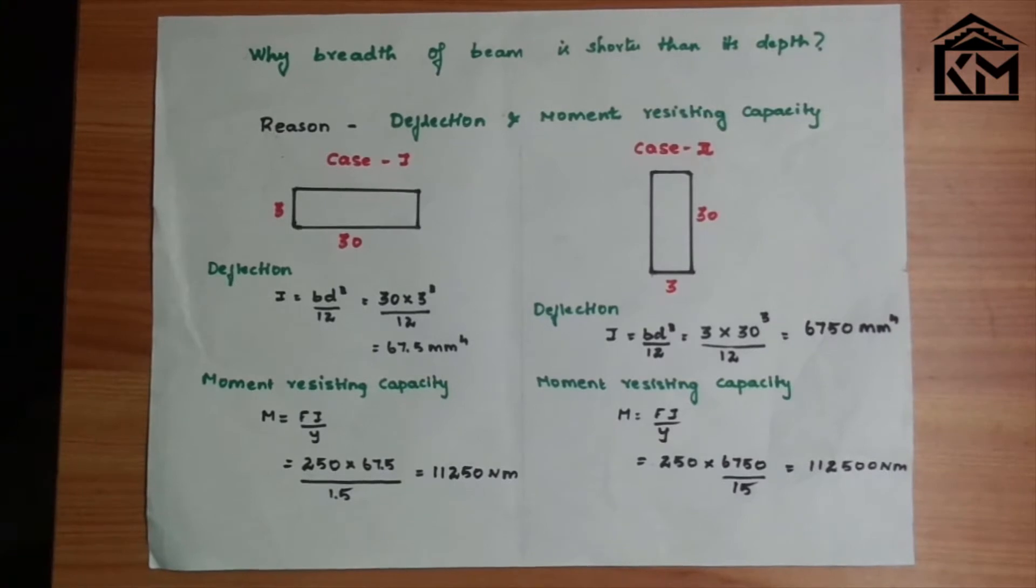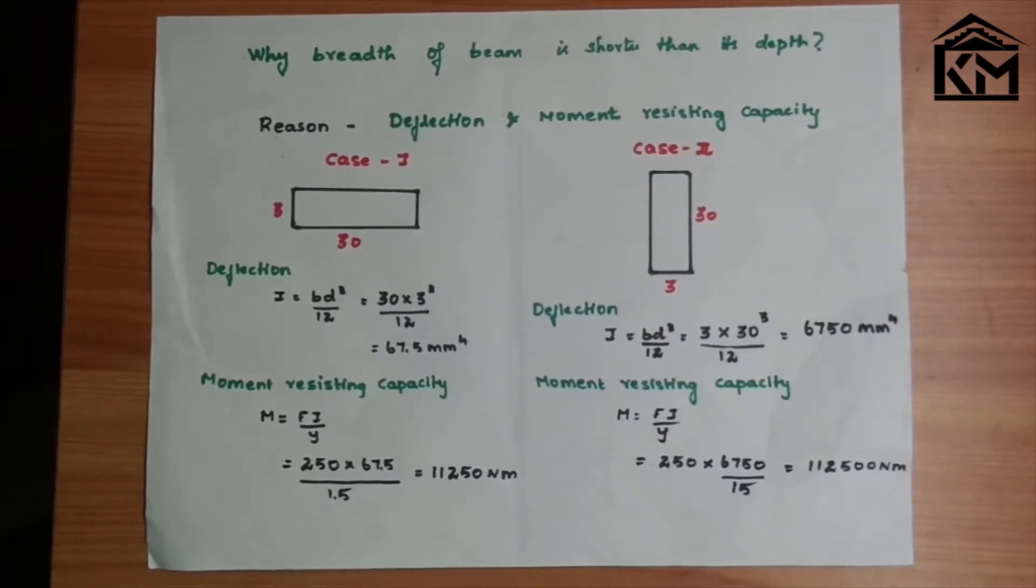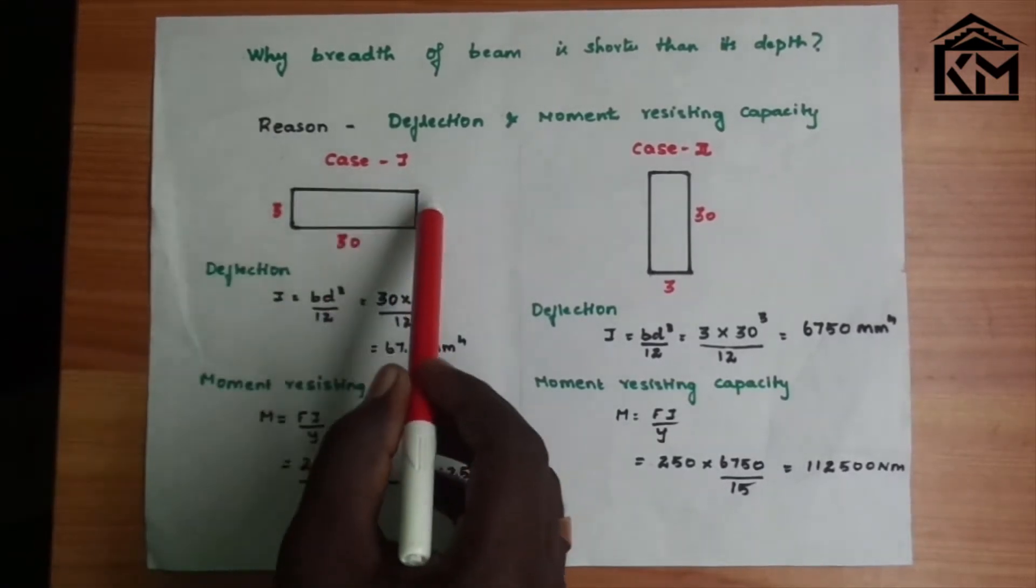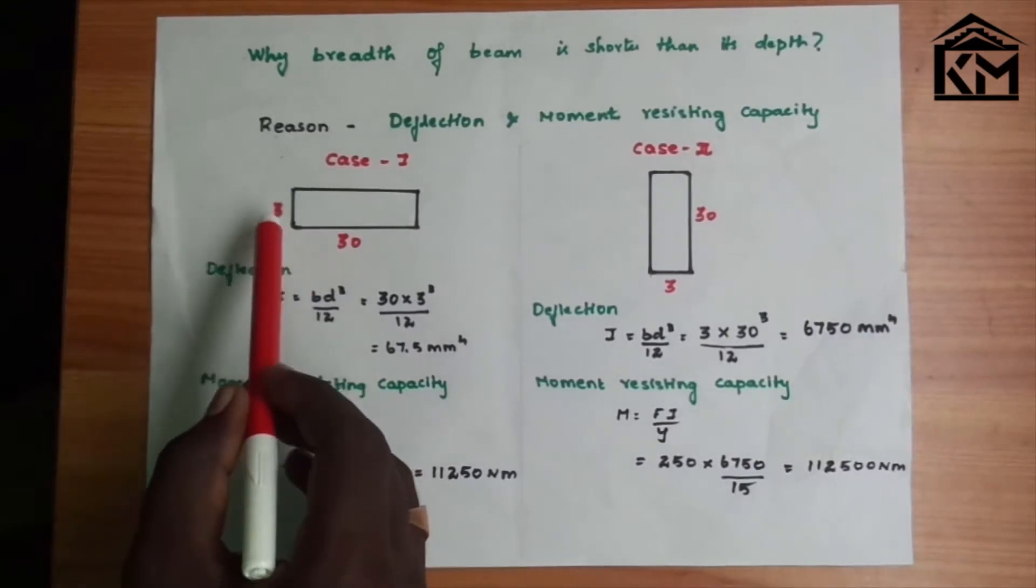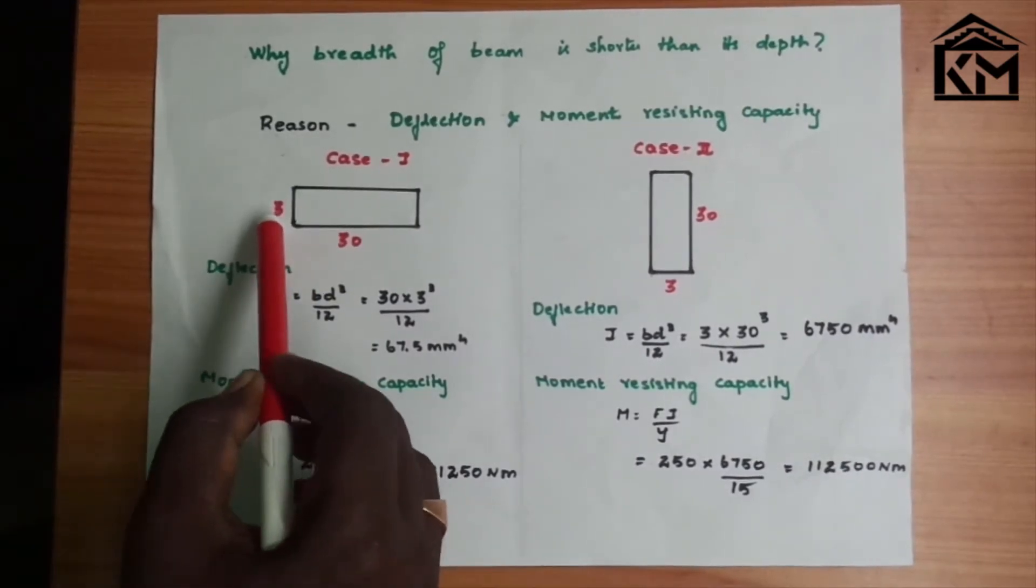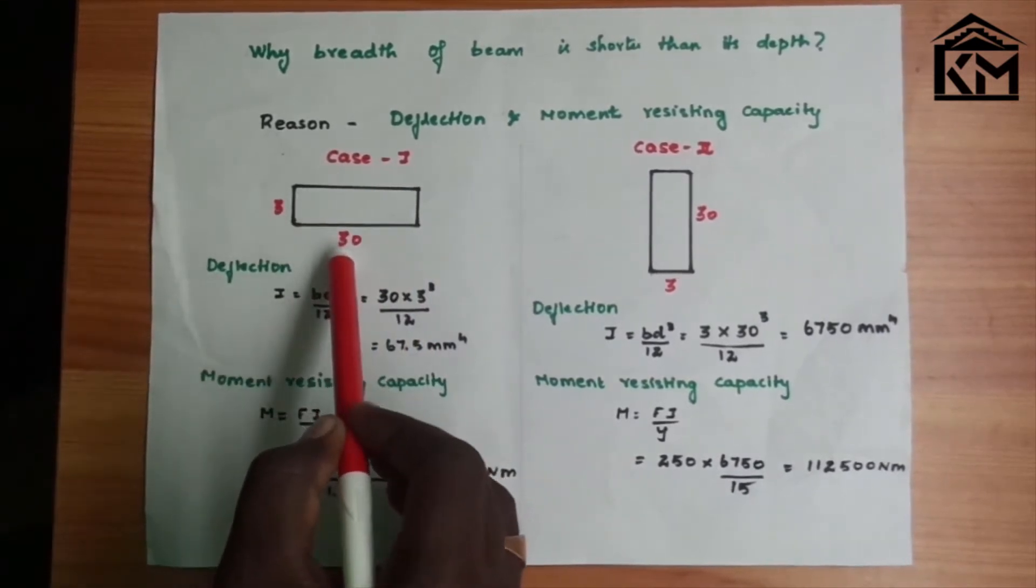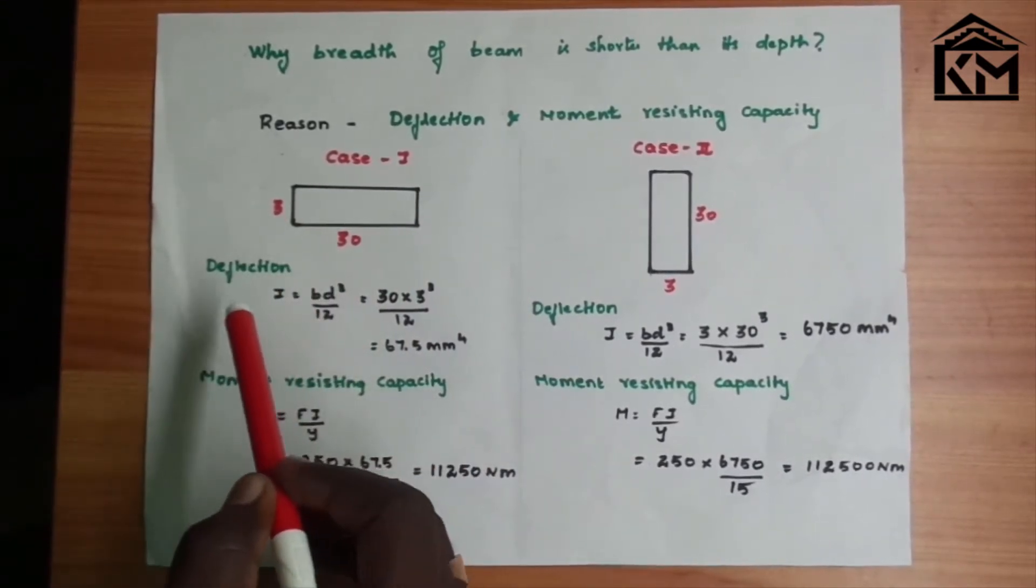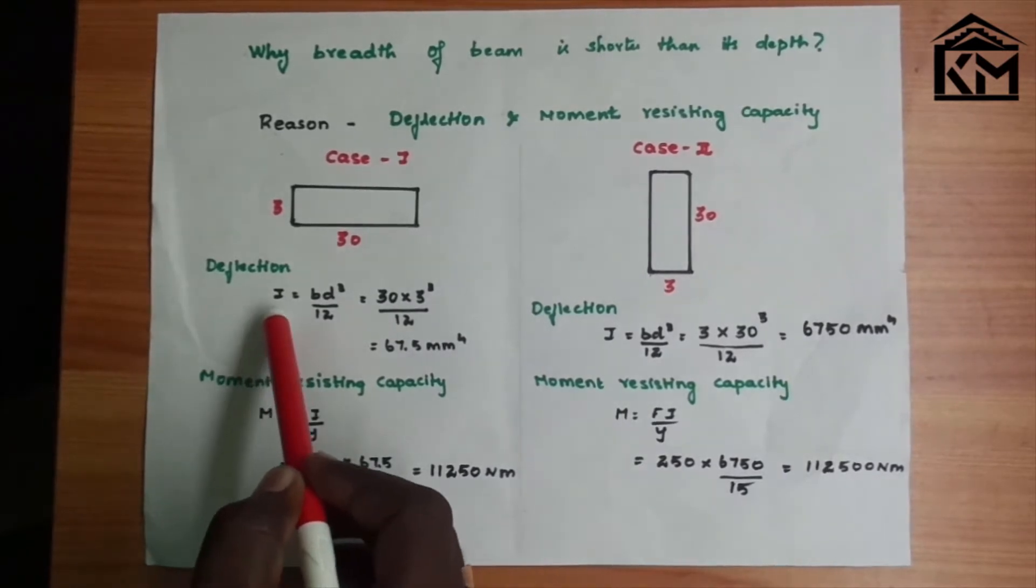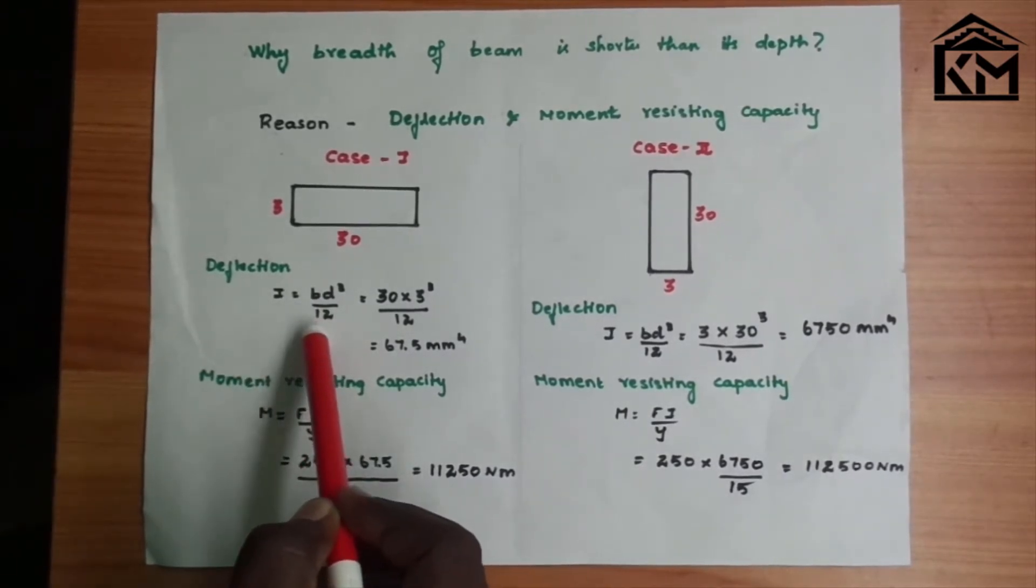So for deflection, let's take a small example. Let's consider this beam. The depth of your beam is 3, and the breadth I will consider 30. You can use centimeter or meter. The deflection formula, that is moment of inertia, I equal to bd cubed divided by 12.